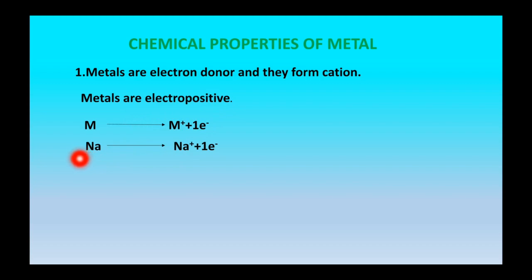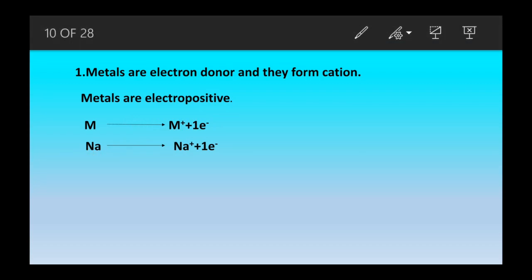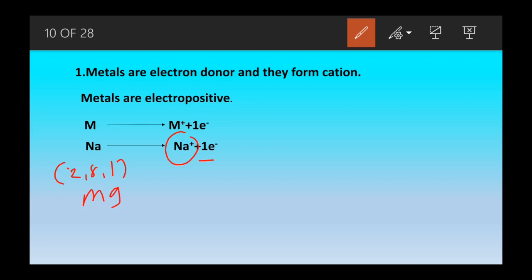For example, sodium has atomic number 11 and its electronic configuration is 2, 8, 1. Sodium's outermost shell contains one electron, so sodium has a tendency to lose one electron. When sodium loses one electron it acquires Na⁺ charge. Similarly, magnesium has electronic configuration 2, 8, 2.